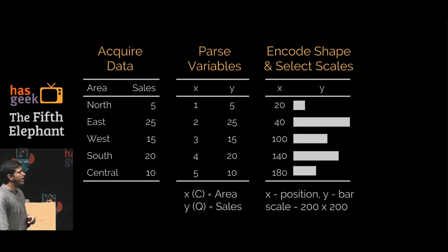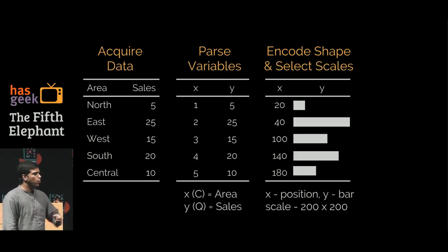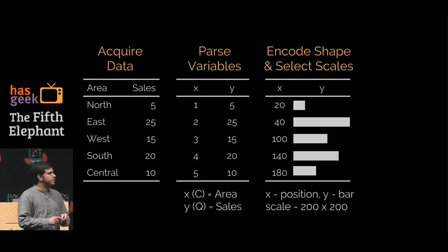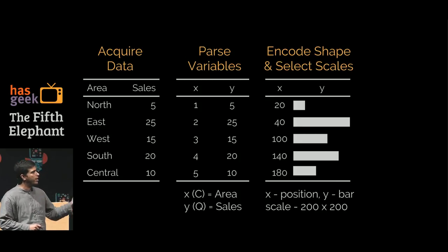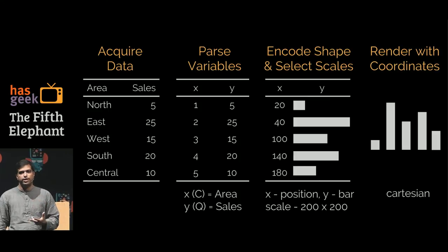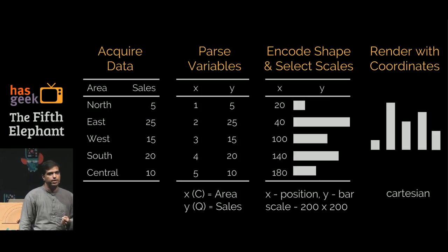Then I would encode them into shapes. I will say X is a position, Y is a bar, and I will scale it on a 200 by 200 pixel screen space. Once I've got that, I would then render it with a coordinate system, in this case Cartesian, and I will have what would be a bar chart.